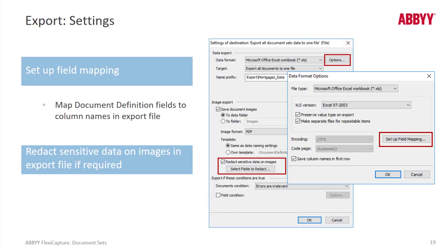There's nothing really new in the interface. We can set up field mappings, and we can access all of the constituent fields in our dataset. Just as a reminder, you have the ability to redact information. A best practice, if you've got personal information on your forms, is to set up more than one export.